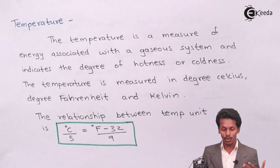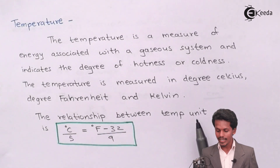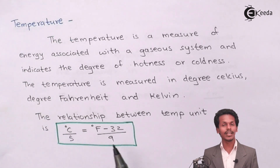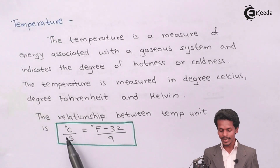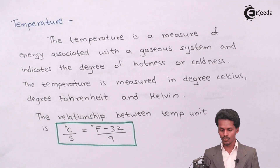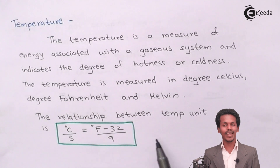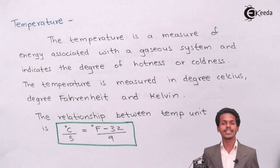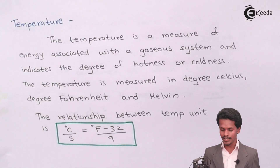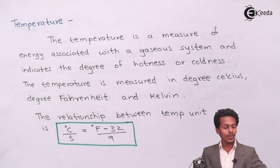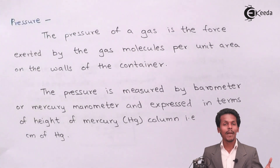Talking about Fahrenheit, degree Celsius and Fahrenheit are related to each other by the formula: °C / 5 = (°F − 32) / 9. This gives the relationship between degree Celsius and Fahrenheit. So temperature for a particular gas is measured in these three units: degree Celsius, Fahrenheit, and Kelvin.